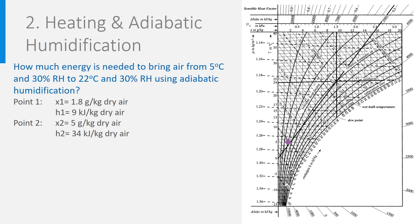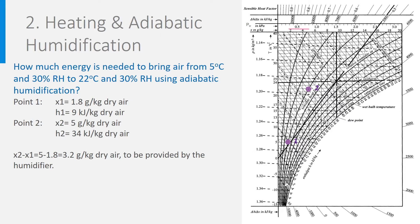What if we now also want to control the humidity and make sure the relative humidity is 30 percent after heating? We start again from point 1 at 5 degrees, 30 percent relative humidity, and absolute humidity 1.8 gram per kilogram dry air. Point 2 at 22 degrees and 30 percent humidity has absolute humidity 5 gram per kilogram. So to go from 1 to 2 we need to heat and to add water vapour to the air. The quantity of water vapour that must be added is 5 minus 1.8 equals 3.2 gram water vapour per kilogram dry air.